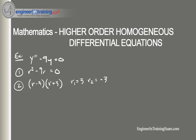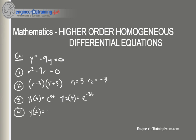Since the two roots are real and distinct, we can determine y1(t) and y2(t). So y1(t) is e^(3t) and y2(t) is e^(-3t). Plugging that into our general equation, we get y(t) equals c1·e^(3t) plus c2·e^(-3t). That is our general solution.